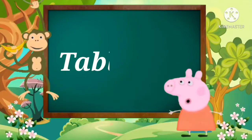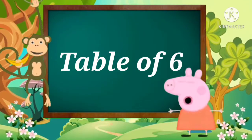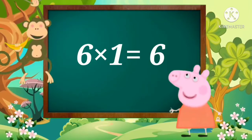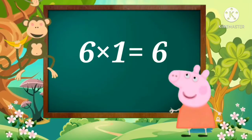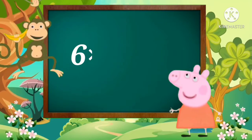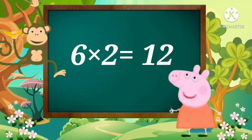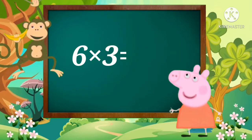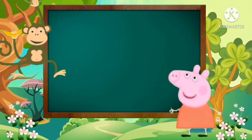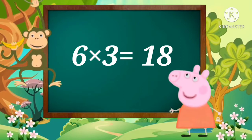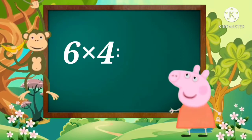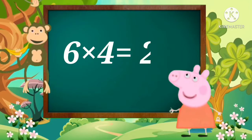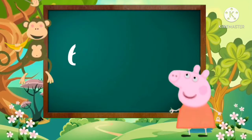Hello kids, now let's learn the table of six. Six ones are six. Six twos are twelve. Six threes are eighteen. Six fours are twenty-four.